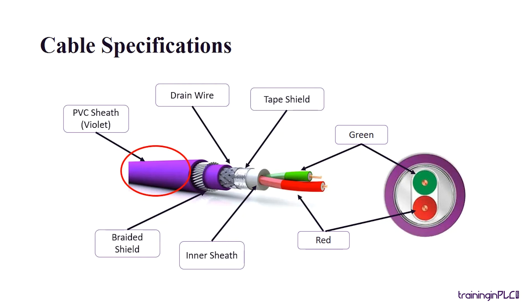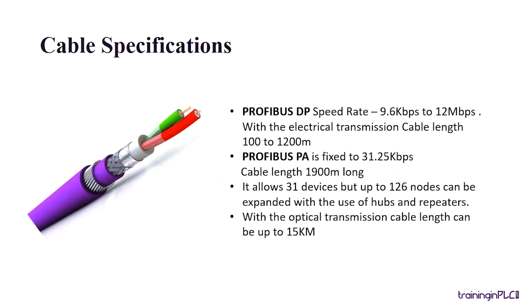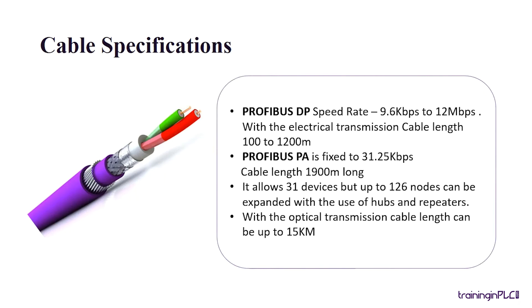The speed rate of the PROFIBUS DP and PA are different. PROFIBUS DP has a speed rate of 9.6 kilobits per second to 12 megabits per second, and it can be used for 100 to 1200 meter length. PROFIBUS PA has a fixed speed rate of 31.25 kilobits per second, and it can be used up to 1900 meters, allowing up to 31 to 126 node devices to connect. And if it's an optical transmission, the cable length can be used up to 15 kilometers.